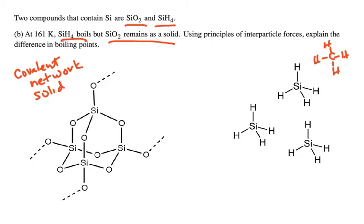For SiO2, covalent network solids mean each silicon and each oxygen are linked together with covalent bonds, and covalent bonds are very strong. So that is going to be hard to disrupt, so that's why that's going to remain a solid. The interparticle forces here are covalent bonds.